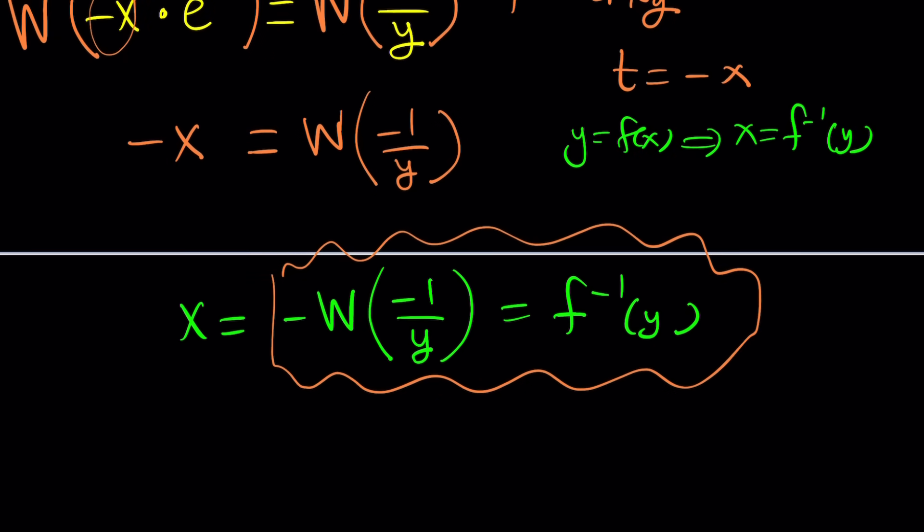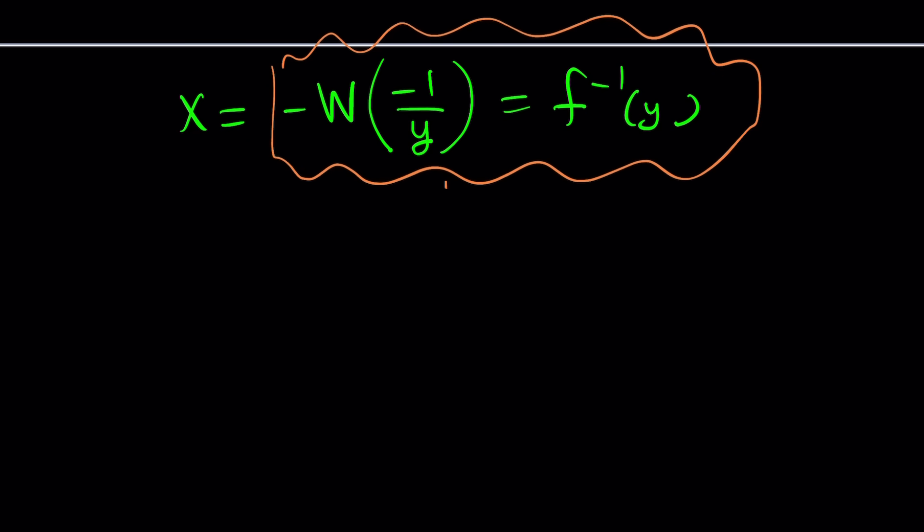Of course, that doesn't make sense, because if x is the independent variable for f, for f inverse it is going to be y. But since all functions pretty much are expressed in terms of x, that's why we do this conversion. But don't worry about the previous x. It's gone. Now we are replacing.